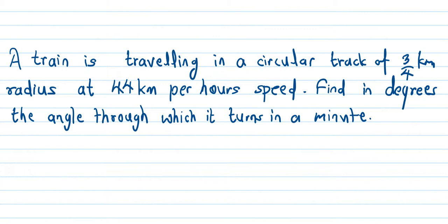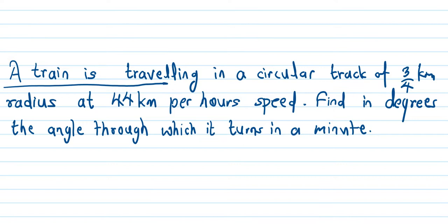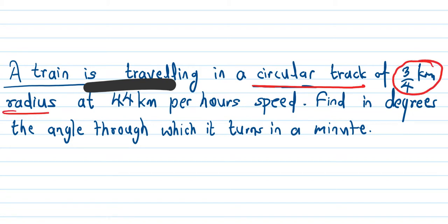This question says: A train is traveling in a circular track. The train is traveling in a circular path of three by four kilometer radius at 44 kilometer per hour speed.